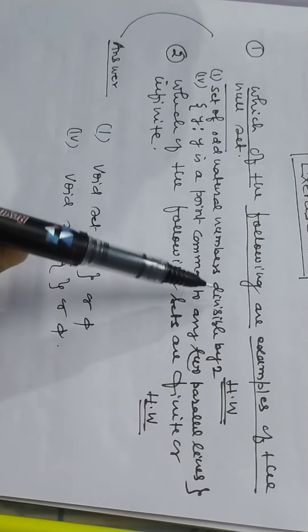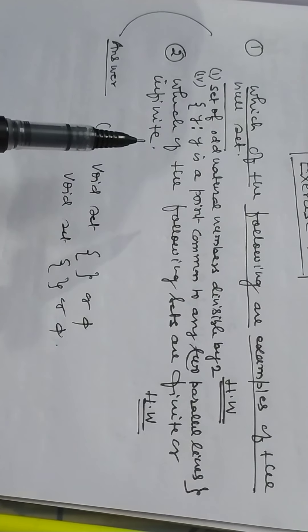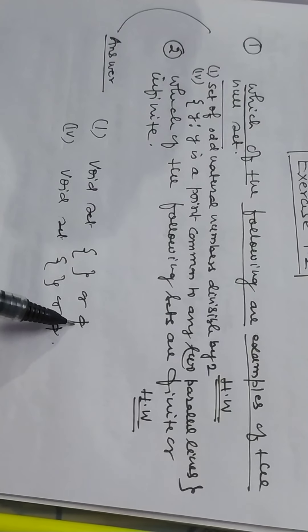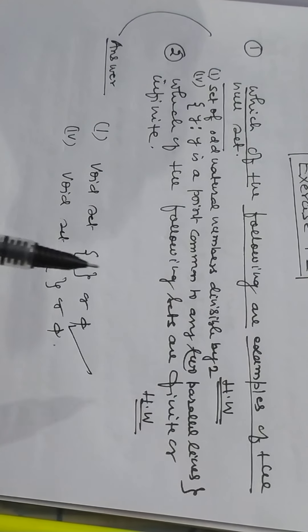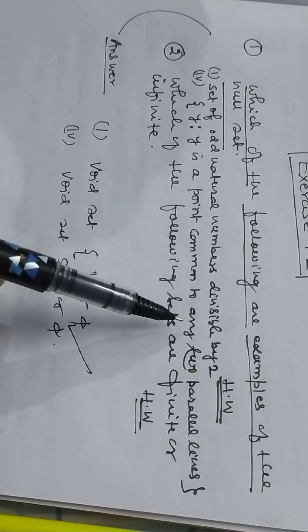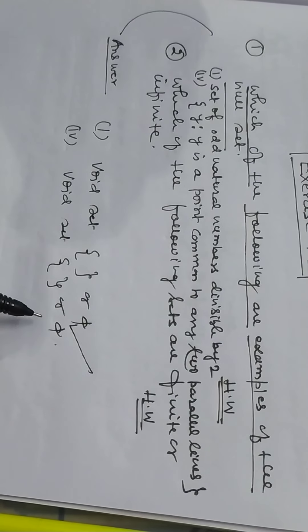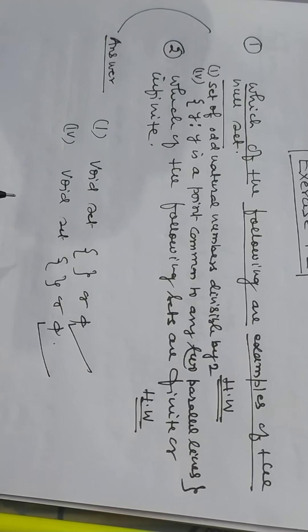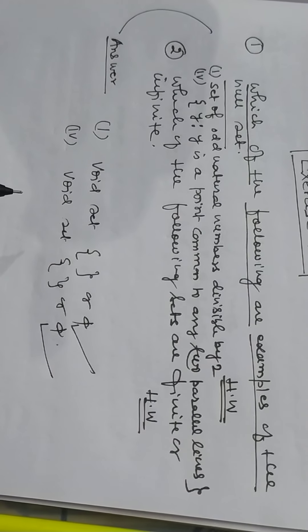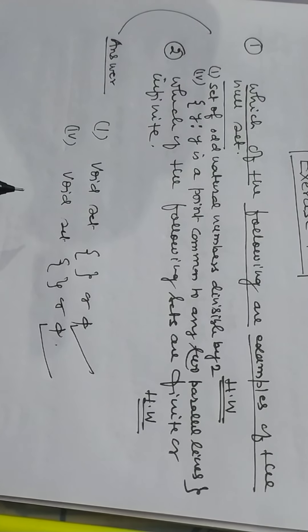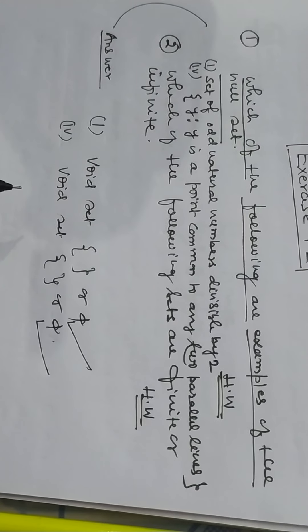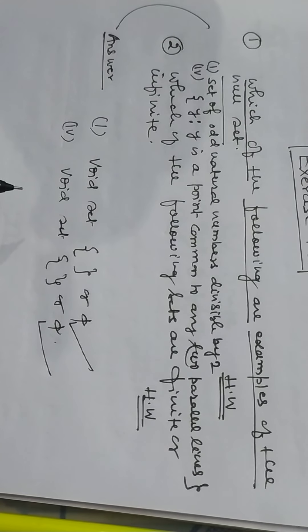Now, set of odd natural numbers divisible by 8, this is the example of void set. Y is a point common to any two parallel lines, it is also the example of void set. And you can solve other problems of this group also.